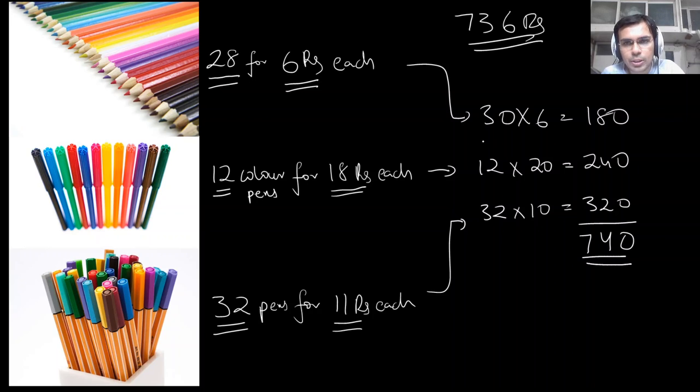Now the total of this would be 740. Yes, the shopkeeper gave you 736, it's close enough, so you know that whatever the shopkeeper has given is actually pretty close to the estimate, so you know that it should be correct.